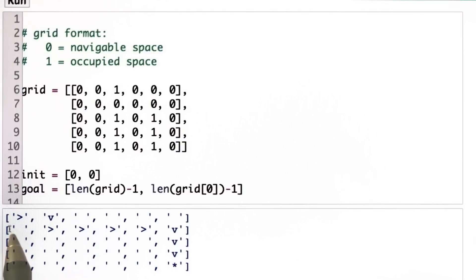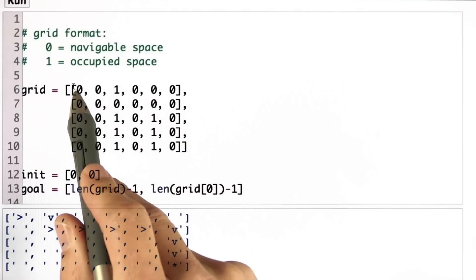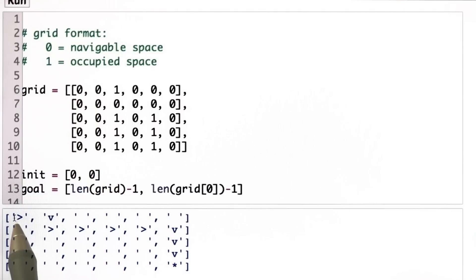Here's the output I'd like to see. There's an arrow to the right, which is the optimal action to take in this cell. And again, this is ambiguous. There might be a different optimal action that's equally good, but my software picked the one to the right.